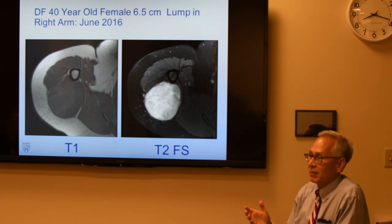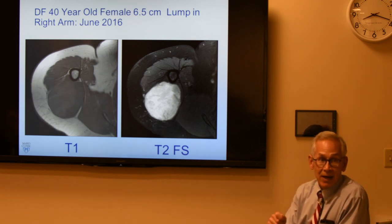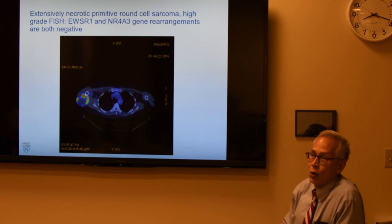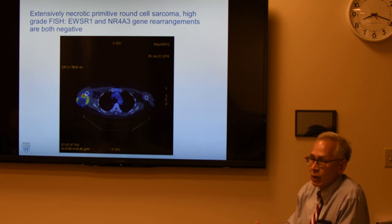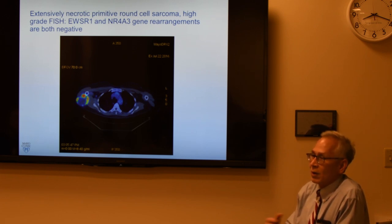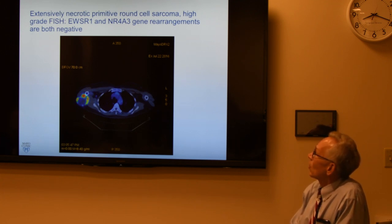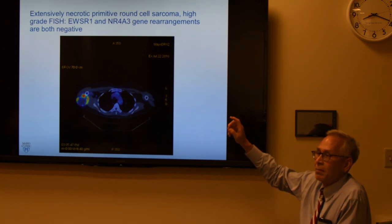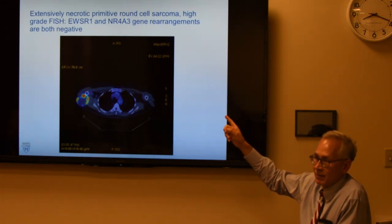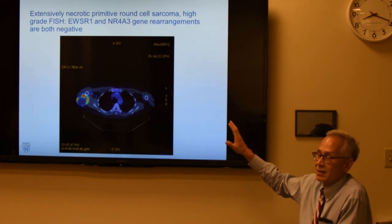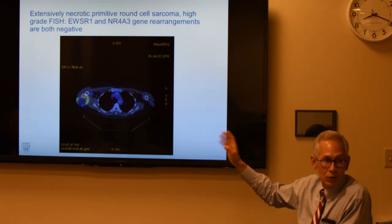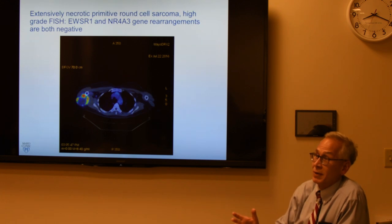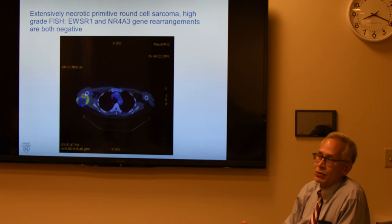The next step is biopsy. At Mayo we do a lot of CT-guided or ultrasound-guided biopsies. The diagnosis was a primitive round cell sarcoma — a high-grade blue round cell tumor. We did extensive molecular testing including EWSR1 and NR4A3 gene rearrangements looking for CIC-DUX4, BCOR, or synovial sarcoma. We couldn't figure out exactly what it was. This is a very aggressive tumor that acts like Ewing sarcoma — small round cell — but doesn't have any of the markers.